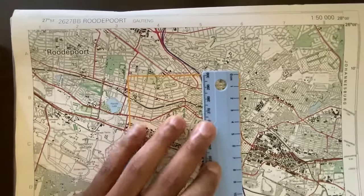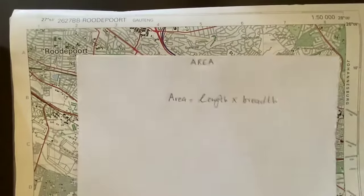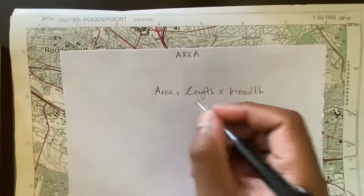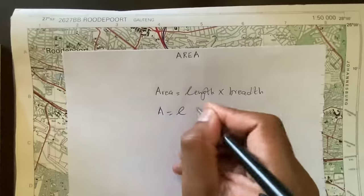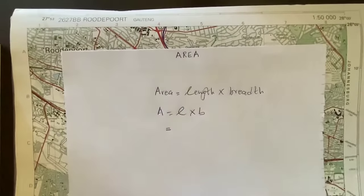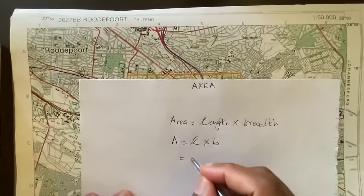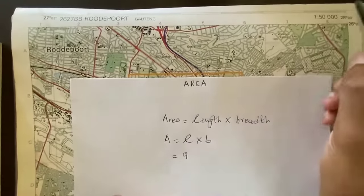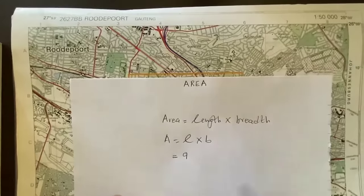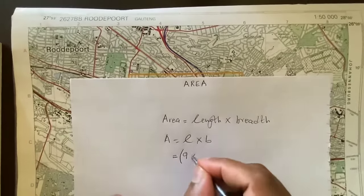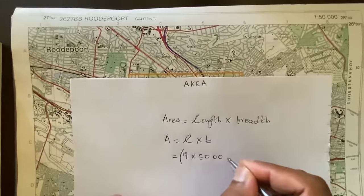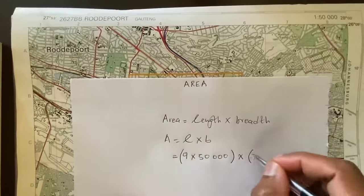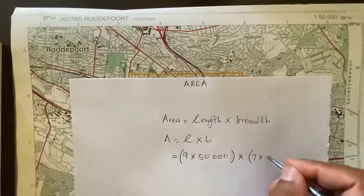From here we can work everything out. Remember the formula for area is area equals length times breadth, or A = L × B. For the measurements we got, the length was nine centimeters. Every distance measured on the map must be converted using the scale, so this will be nine times 50,000 for the length, times seven centimeters — the breadth — multiplied by 50,000.